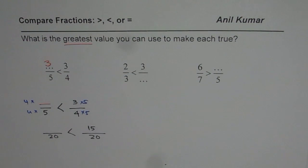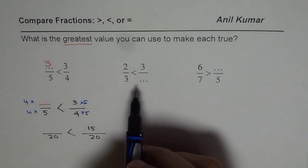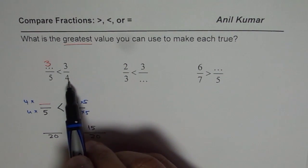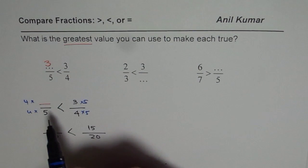So that is how we could get the answer. So this is one method to do it. Now I will teach you second method in the second portion. So 3 over 5 is less than 3 over 4, and this cannot be more than 3. So that is the greatest value which you can place here.